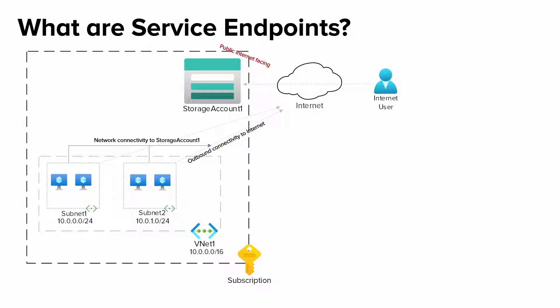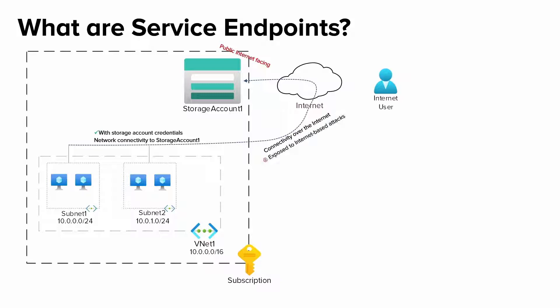Anyone with appropriate credentials can access the storage account from the internet by default. Coming back to our scenario, the storage account in Azure is a PaaS service that is a public internet-facing service. Our VMs in the subnets of our VNet with appropriate credentials can also communicate with the Azure PaaS service such as storage account. Without service endpoints, the connection from Azure VMs to this storage account would go through the internet, meaning anyone can potentially access your Azure services.